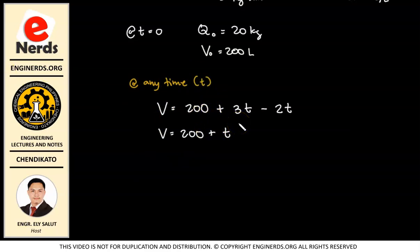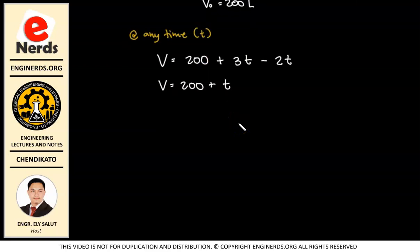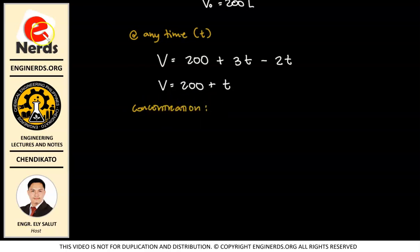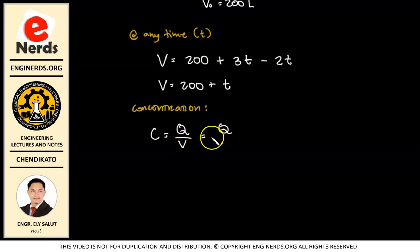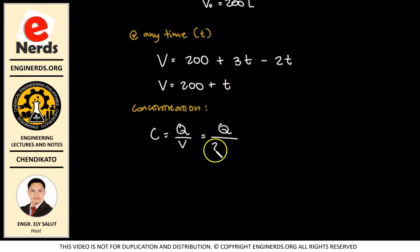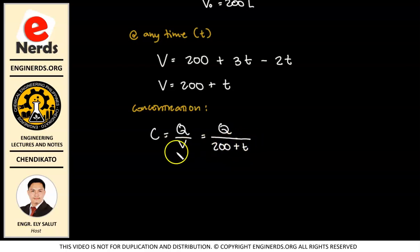We also know that the concentration changes with time. Concentration is equal to the amount of salt over the total volume. We don't know Q or V individually, but we have our volume equation. So concentration C = Q over (200 + T).